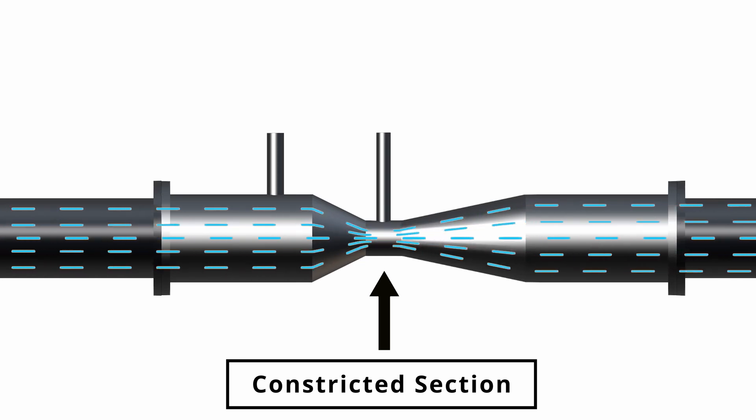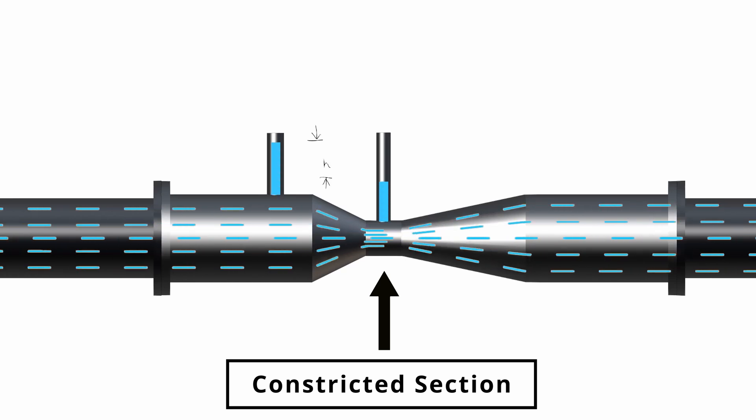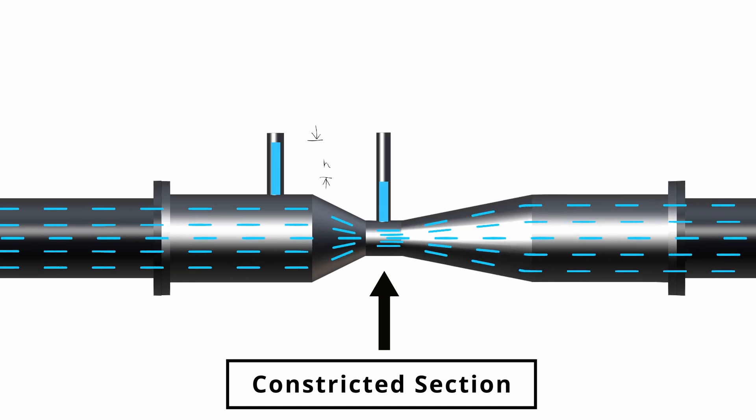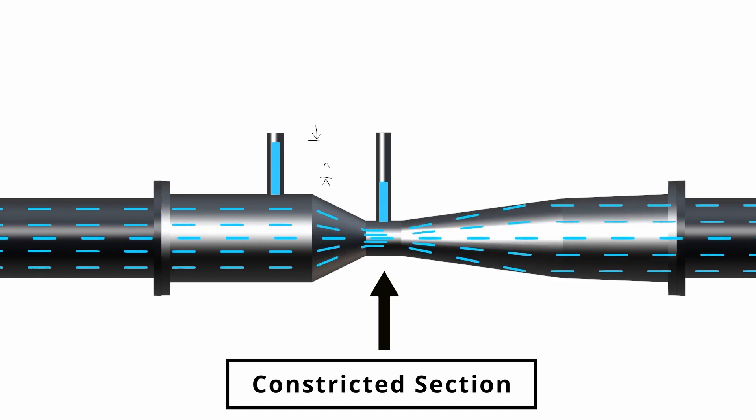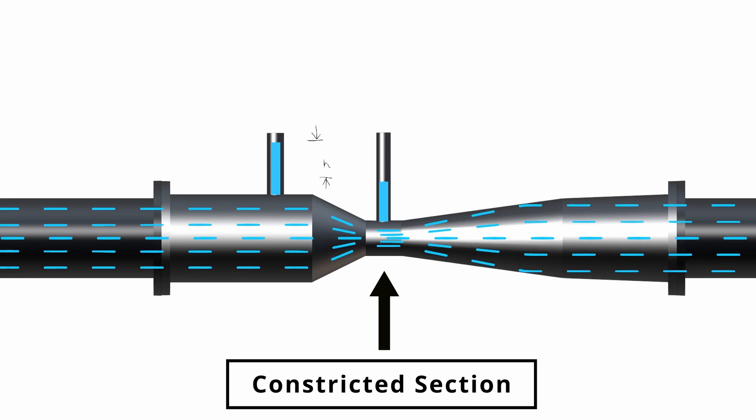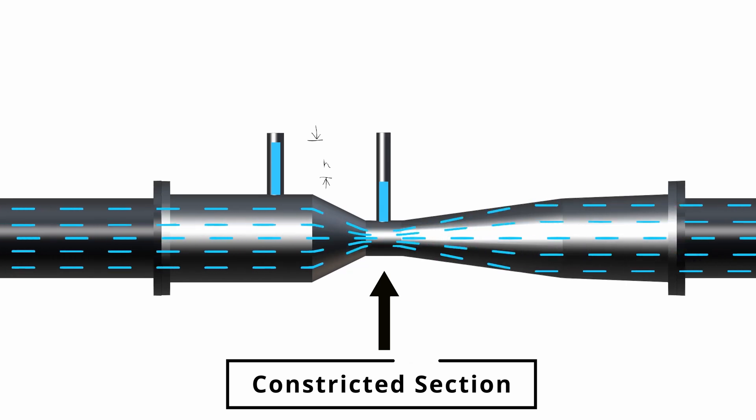When fluid flows through a venturi meter, it accelerates as it passes through the constricted section, resulting in a decrease in pressure. By measuring the pressure difference between the narrowest section (throat) and the upstream section, the flow rate can be determined.